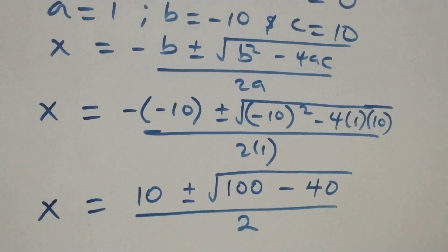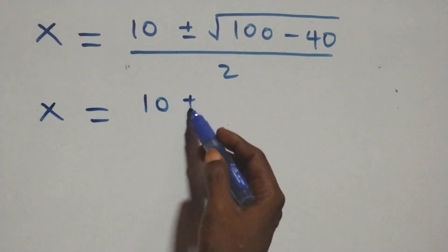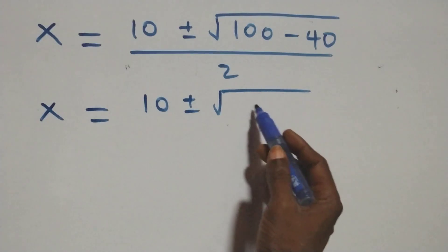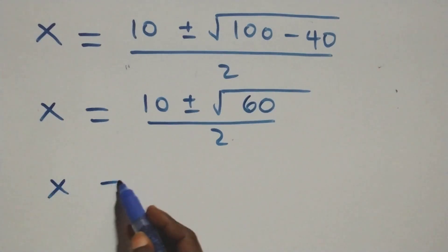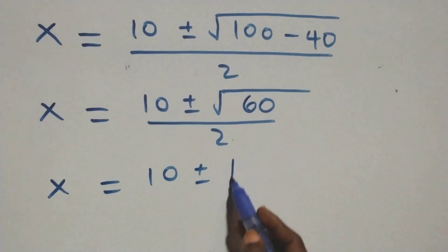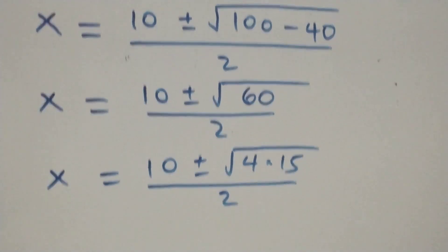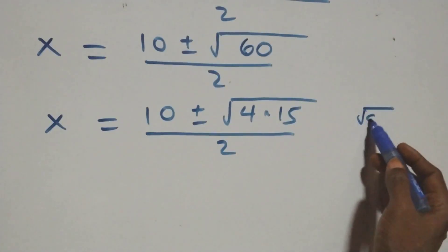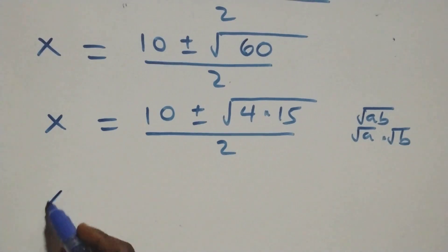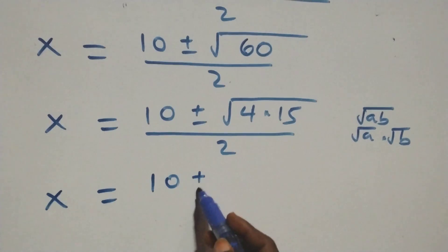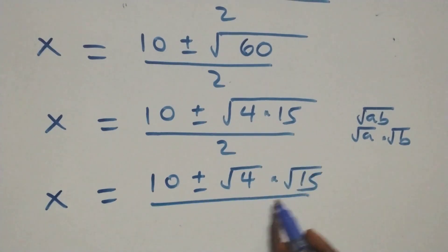This becomes x equals to ten plus or minus square root of sixty, over two. We can write sixty as four times fifteen, so x equals to ten plus or minus square root of four times square root of fifteen, over two.